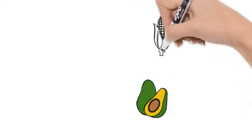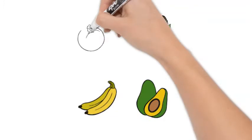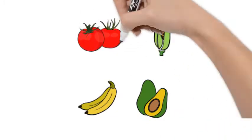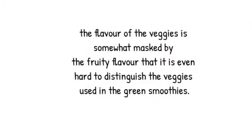Since vegetables are combined with fruits in making green smoothies, you will get to eat some vegetables without even tasting them. The flavor of the veggies is somewhat masked by the fruity flavor, and it is even hard to distinguish the veggies used in the smoothies.